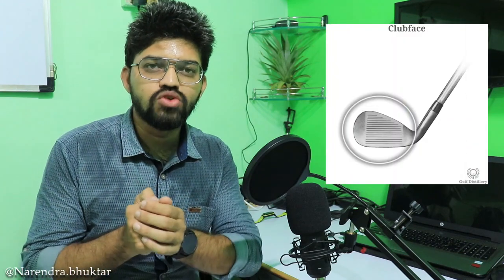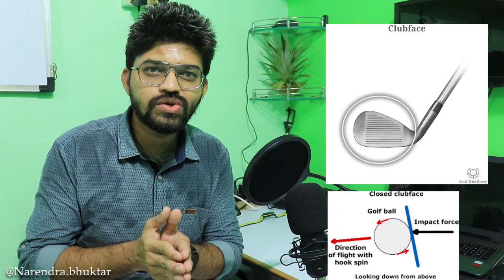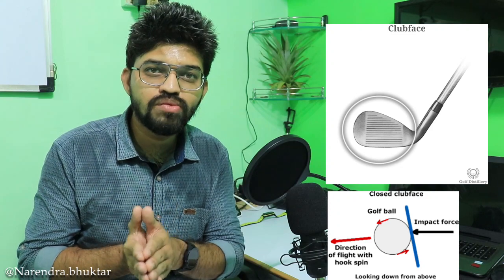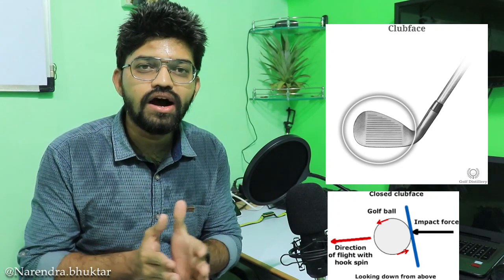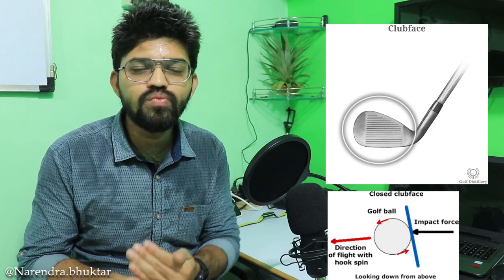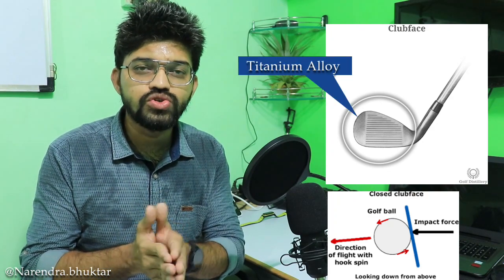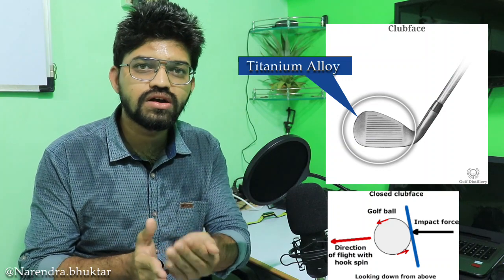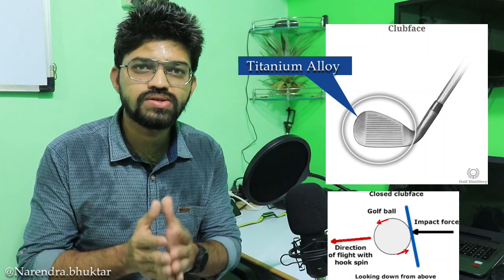Golf clubs also use SMAs. The club face has an insert — whenever you hit a ball with the club face, a compressive force acts and the club face undergoes deformation. At room temperature, it regains its previous shape. Shape memory alloys are used in the club face of golf clubs for this kind of application.